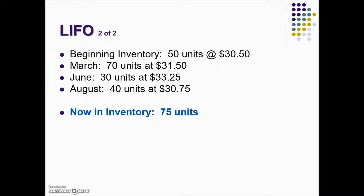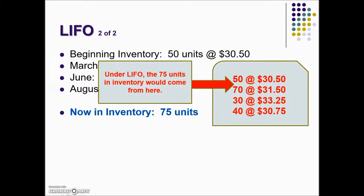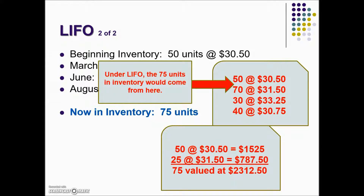Here's another example giving us beginning inventory through August. Using the LIFO method, what would the inventory of 75 units be? Last in, first out means the most recently purchased are sold first, so the 75 units remaining come from the beginning inventory. There are 50 units from the beginning inventory still on hand, and 25 more from the March purchase to reach 75 total. The value is the beginning 50 units at $30.50 per unit, plus the remaining 25 units at $31.50. Adding those two costs gives the total inventory value using the LIFO method.